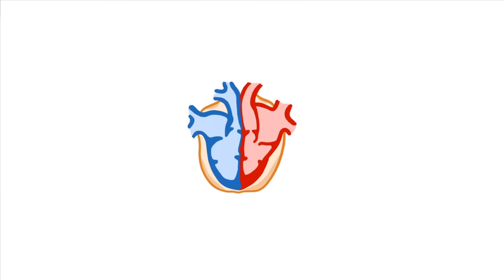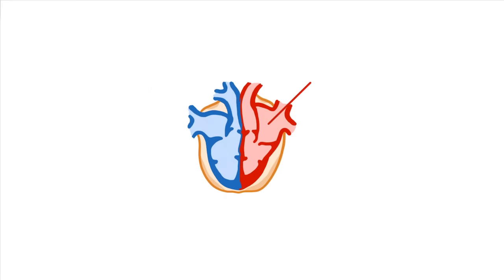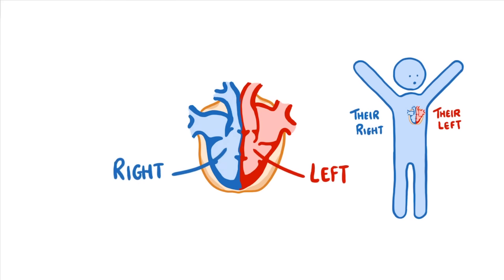Taking a closer look at the heart, we can see that it consists of four chambers with thick muscular walls surrounding them, and then veins and arteries coming in and out. Now whenever you're looking at an image of the heart like we are here, it's as if you're looking at another person from their front, so their left side of the heart is actually on our right and their right side is on our left. Pretty much all of the diagrams of the heart that you come across are drawn in this way, so just remember that the left side is on our right and the right side is on our left.